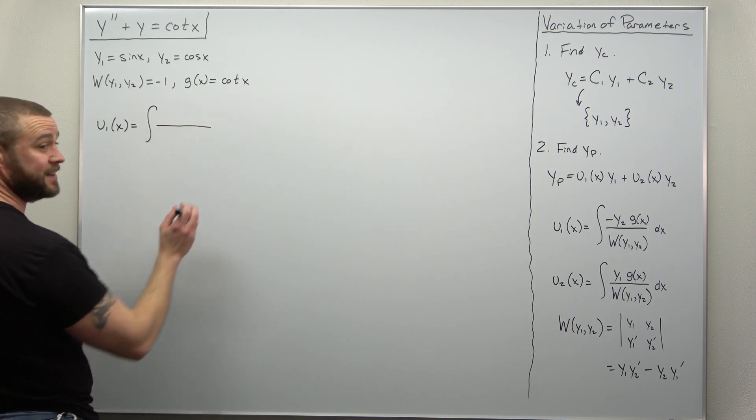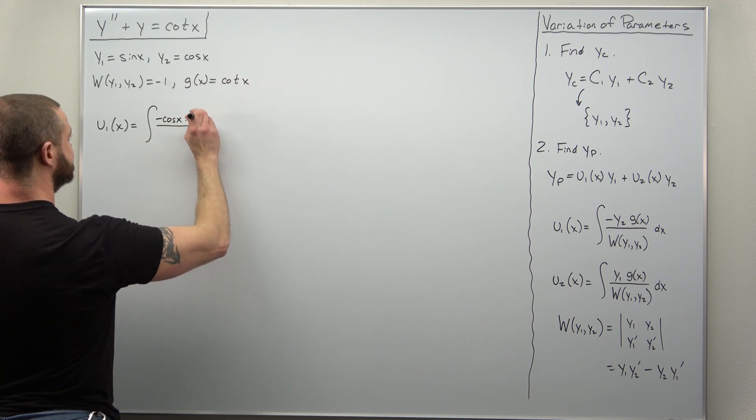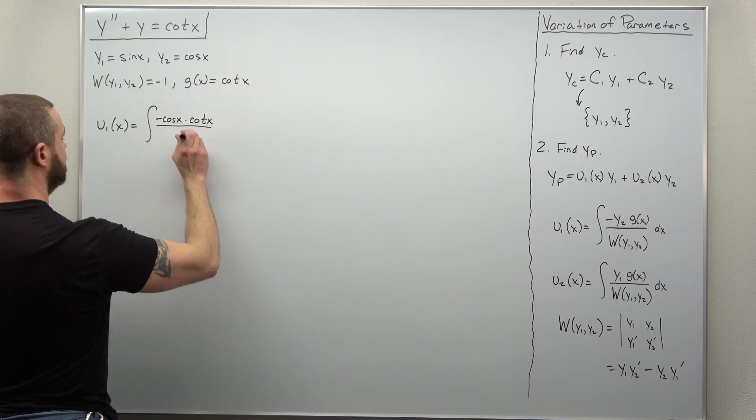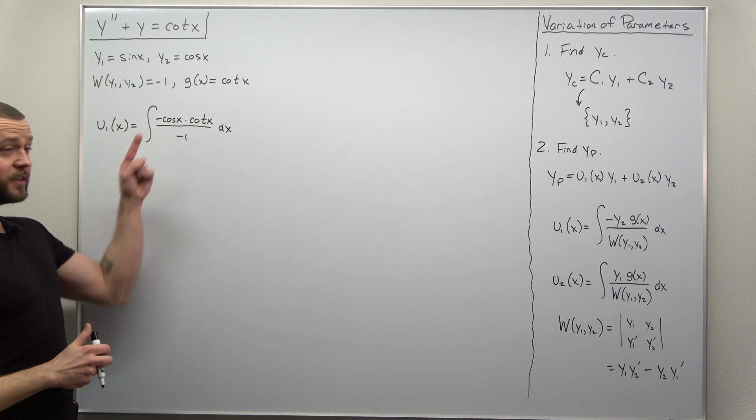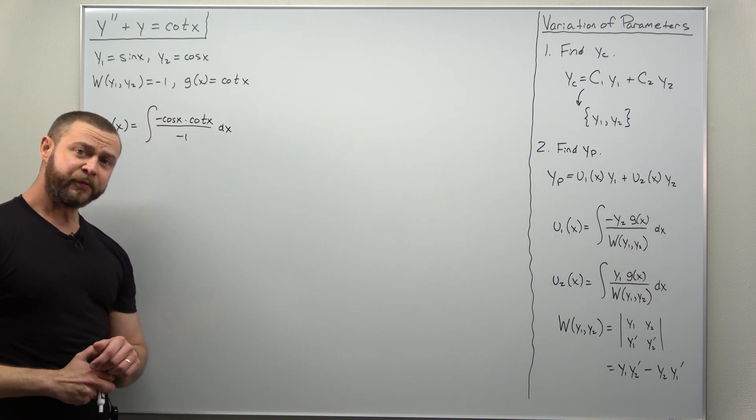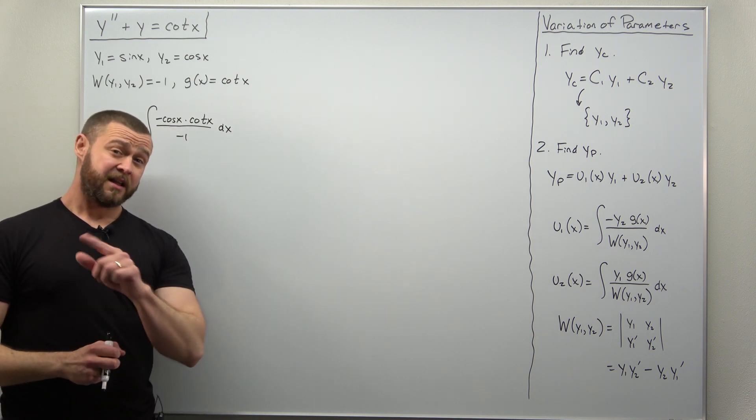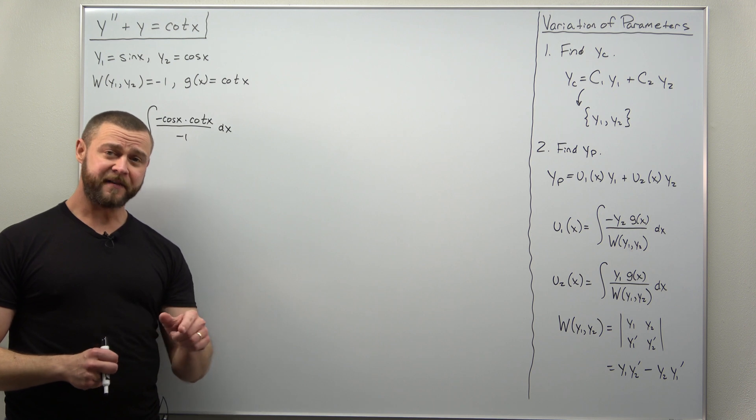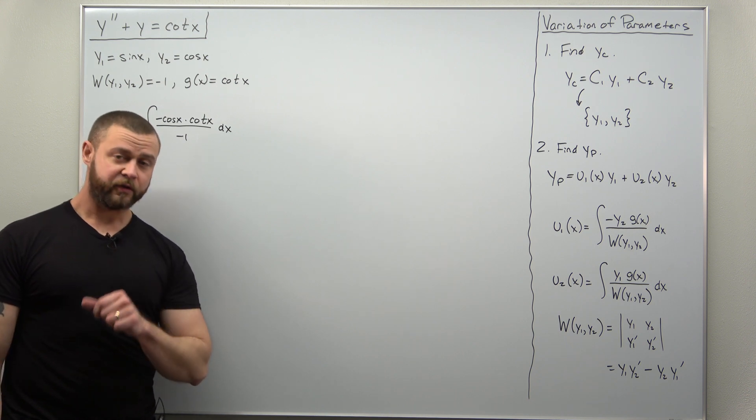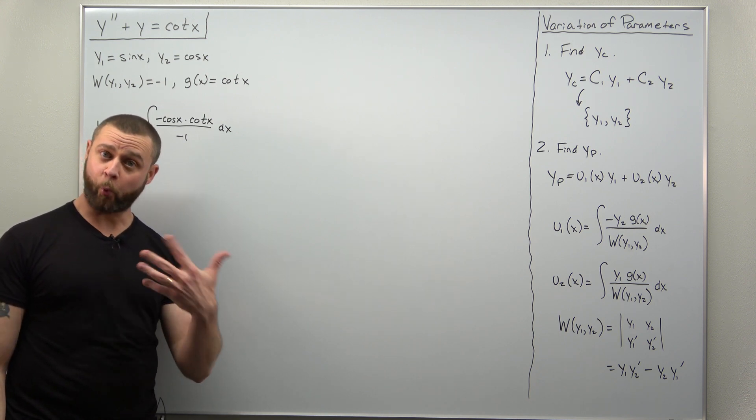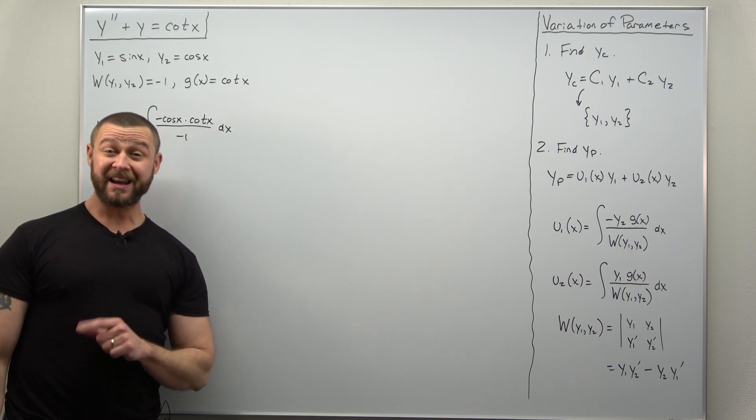Let's evaluate the integral for u1 of x first. So we're going to start, as always, just plug everything in. The formula says we get negative y2, negative cosine of x, times g of x, and then divide it by your Wronskian, and we evaluate that integral. Fortunately, the negatives cancel out, but we're left with this weird trig integral: cosine times cotangent. And thinking back to your Calc 2 course, that doesn't seem to fit any of the nice cases for trigonometric integrals. Now there's a nice little trick that works for quite a lot of the weird trig integrals: just write everything in terms of sine and cosine.